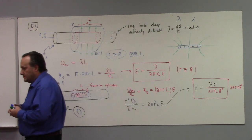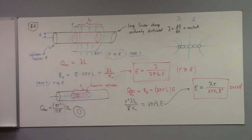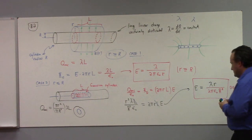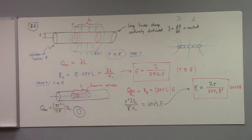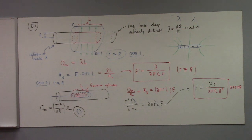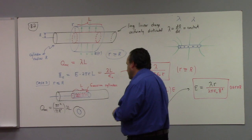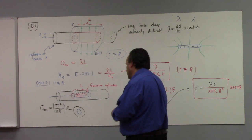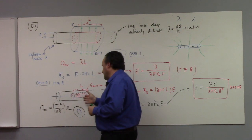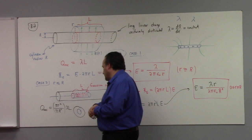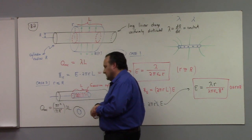A student asks about the R squared in the boundary condition — that was a typo, sorry. Another student asks about the pi R squared over pi R squared step. The larger the area of the Gaussian cylinder cross-section, the more charge it encloses. If I double the area, I double the charge, and the area depends on the square of the radius.